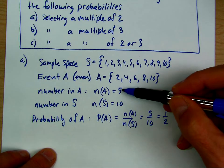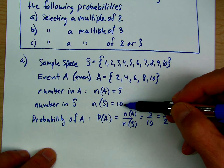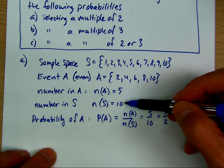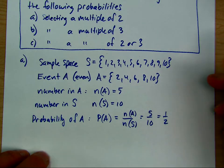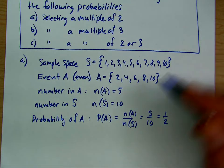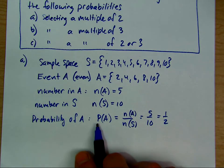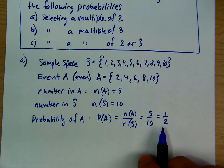The number of elements in A divided by the number of elements in S, the sample space, gives us the probability of A as one over two.